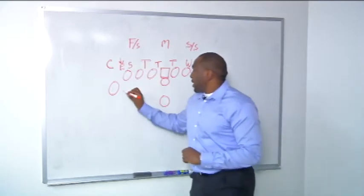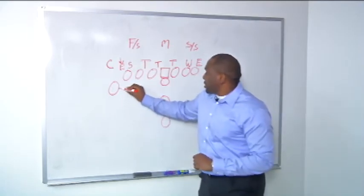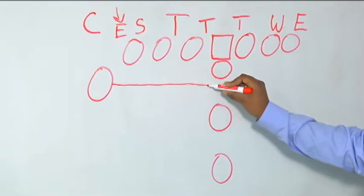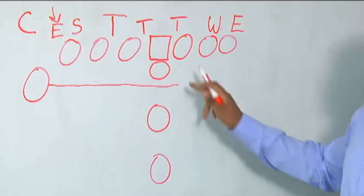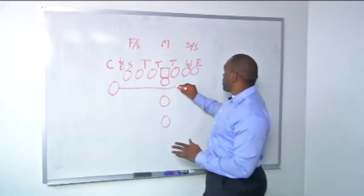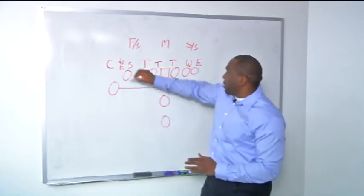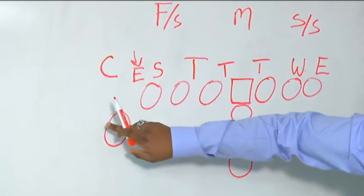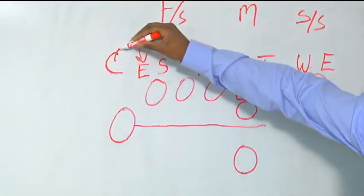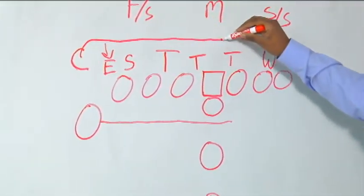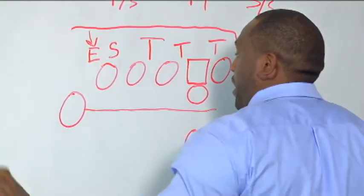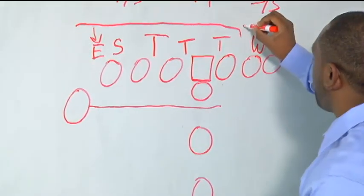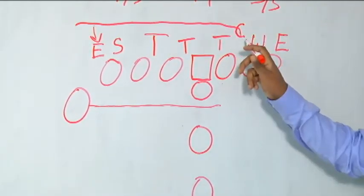So what happens on this play is it's third and one and Julius Thomas comes in motion. He comes in motion and sits right behind Luis Vasquez, looking for a gap. What happens is the corner is assigned to Julius Thomas, so he comes in motion with Thomas. Let's erase the corner from right here and now the corner replaces and is over here.